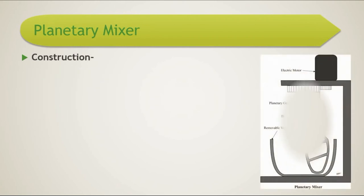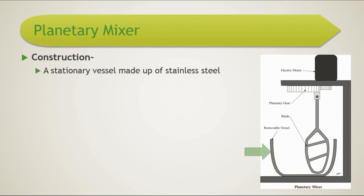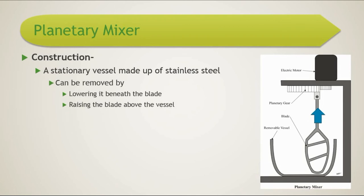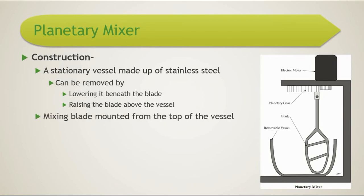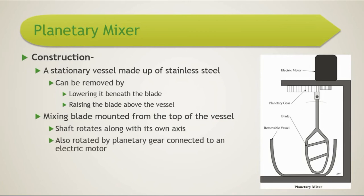It consists of a stationary vessel made of stainless steel which can be removed either by lowering it beneath the blade or raising the blade above the vessel. The mixing blade is mounted from the top of the vessel. The shaft rotates along its own axis, as seen in the animation, and also rotates in a circular path via a planetary gear connected to an electric motor.